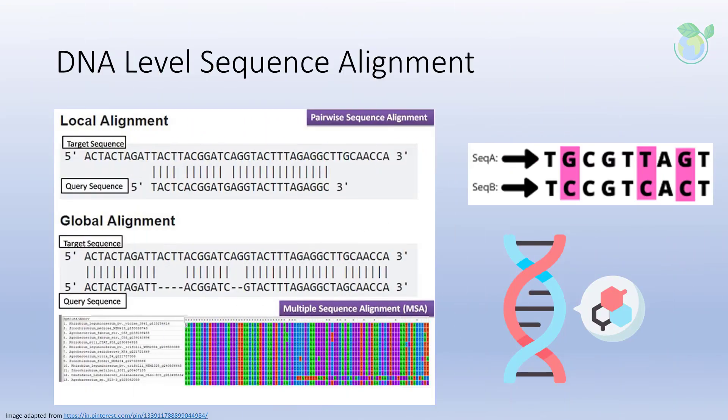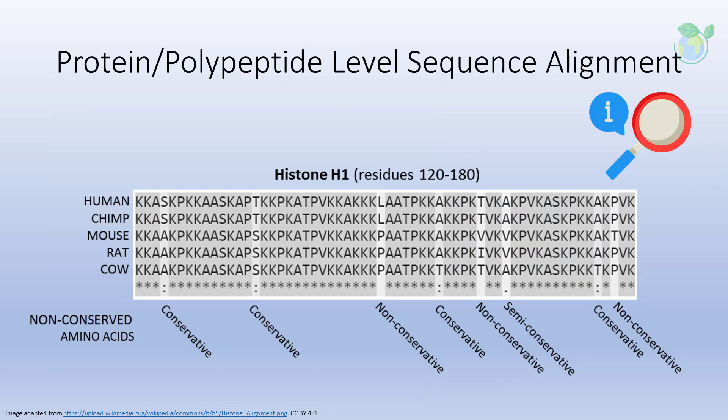For the example shown, sequence alignment of nucleotides can be performed at local or global level. For local level, it is more of a sectional match as close as possible, whereas global alignment additionally considers possible skipped nucleotides or spaces in the maximum alignment. The vertical bars or pipes represent matching characters. Gaps, indicated by dashes, are inserted in between characters in place of missing characters to optimize the number of matches.